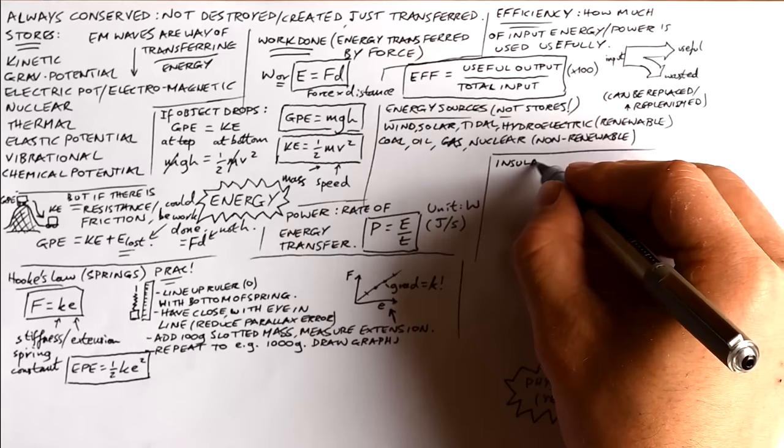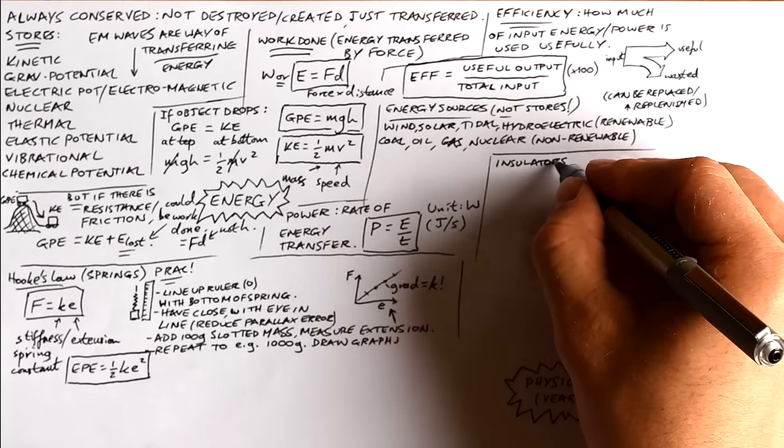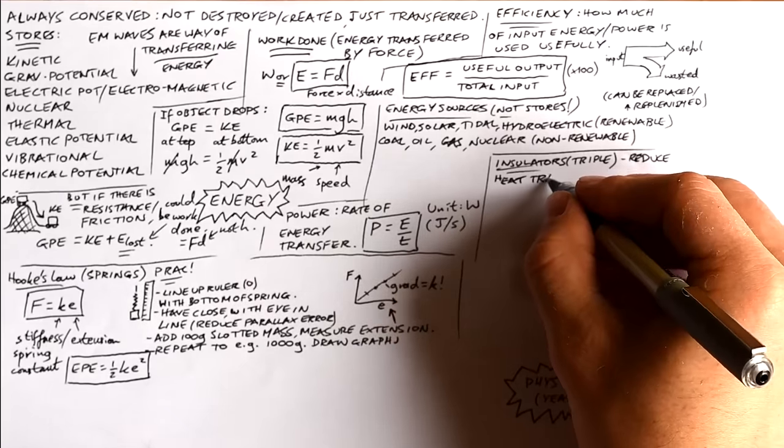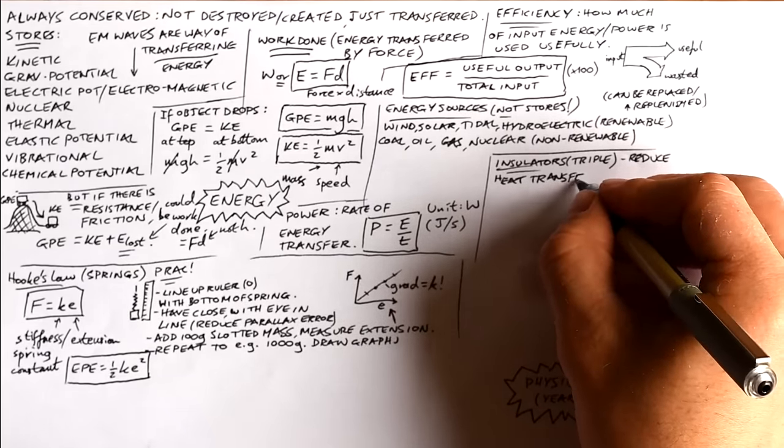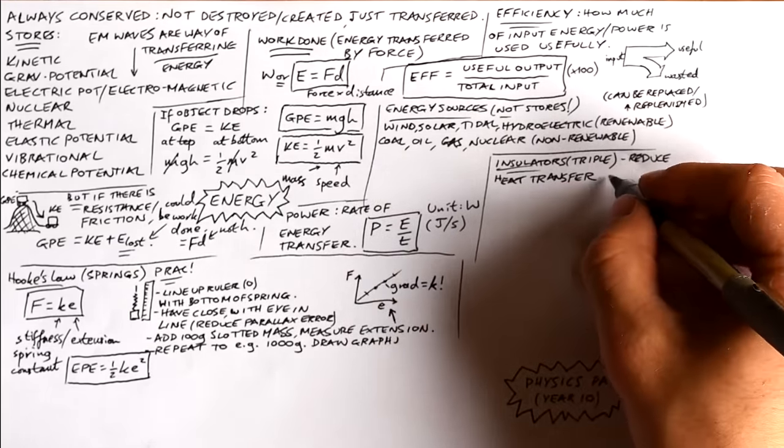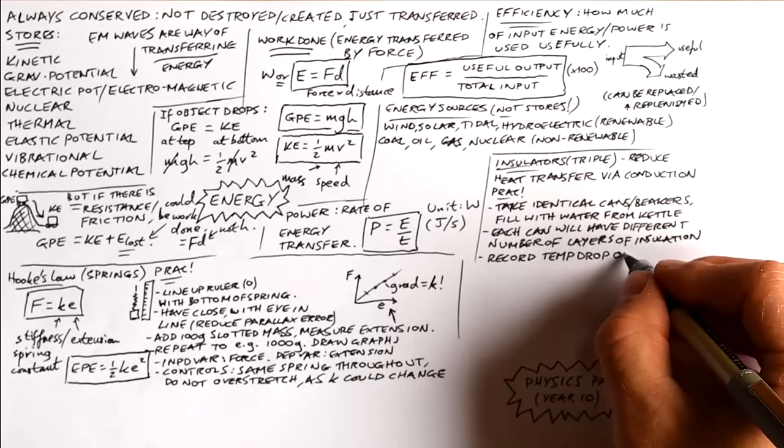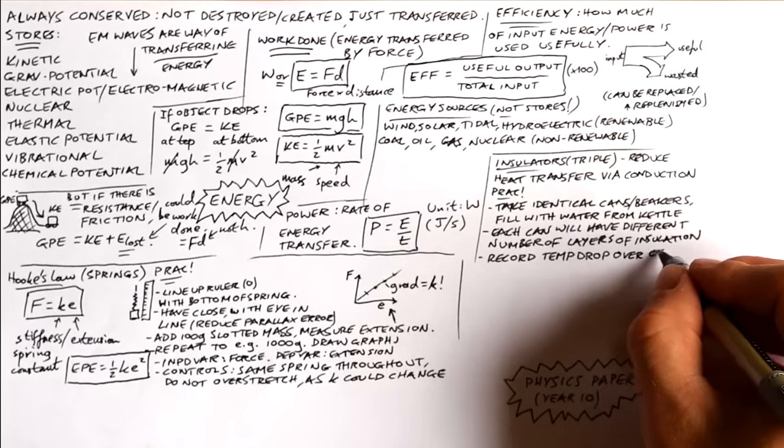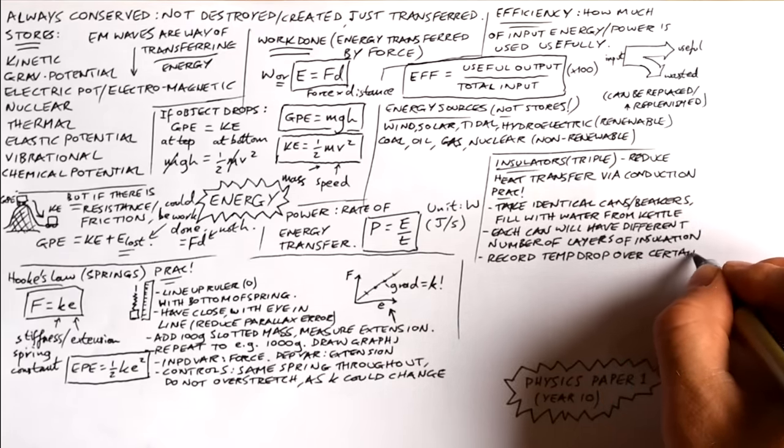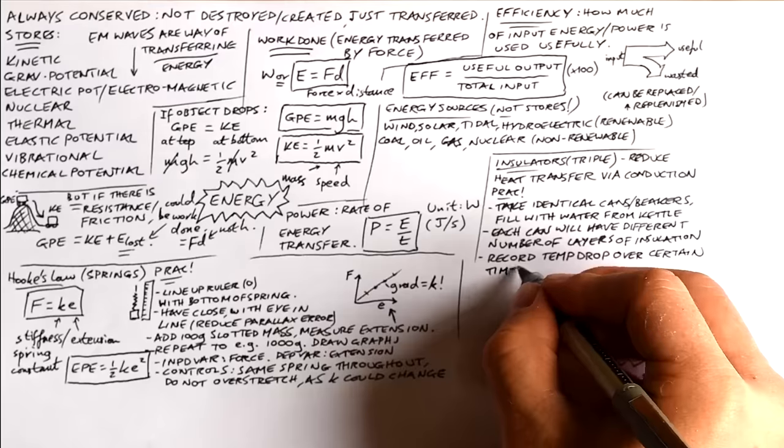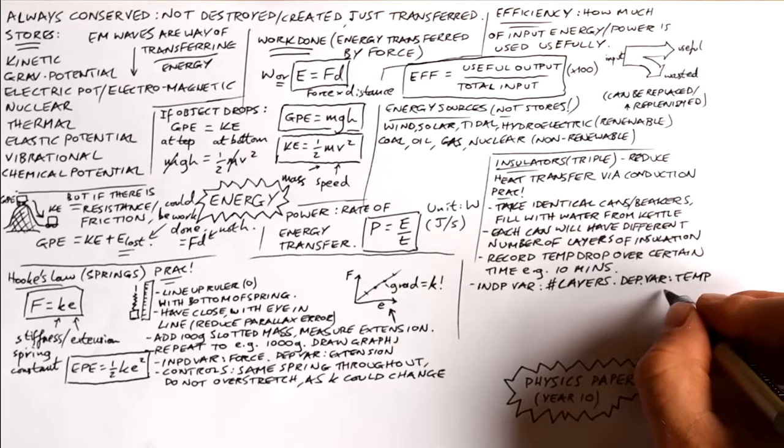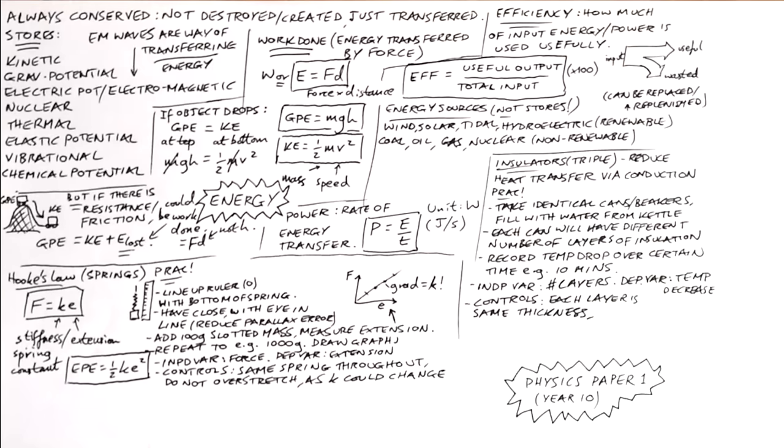Insulators is sometimes just for triple. We reduce heat transfer via conduction with an insulator. This is a practical. All we do is take identical cans or beakers. We fill with water from a kettle. Each can will have a different number of layers of insulation. What we do is pop the water in, then record how much the temperature drops over a certain time, say 10 minutes. The independent variable is the number of layers. The dependent variable is the temperature decrease.